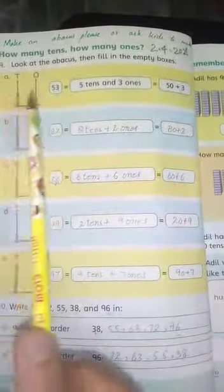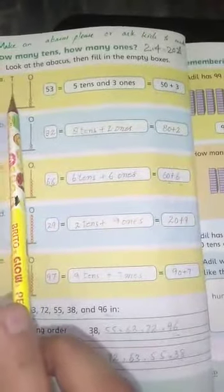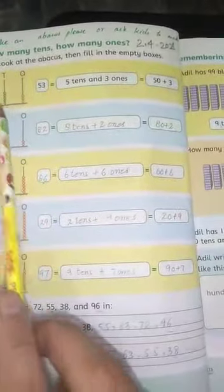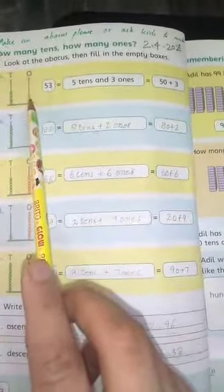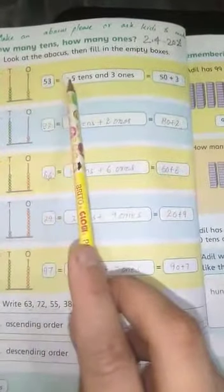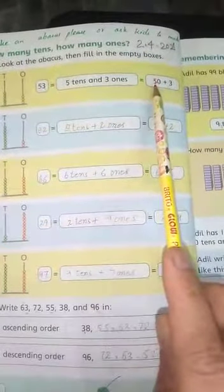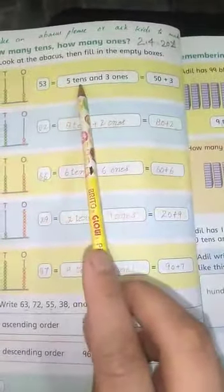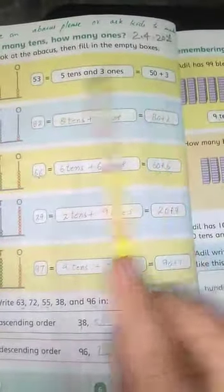Number 1 which we have solved. How many tens? 1, 2, 3, 4, 5. 5 tens. And ones kitnay hai? 1, 2, 3. 5 tens and 3 ones. 50 plus 3. 5 tens are 50, and plus karengay 3 ke saath. The answer ae ga? 53.